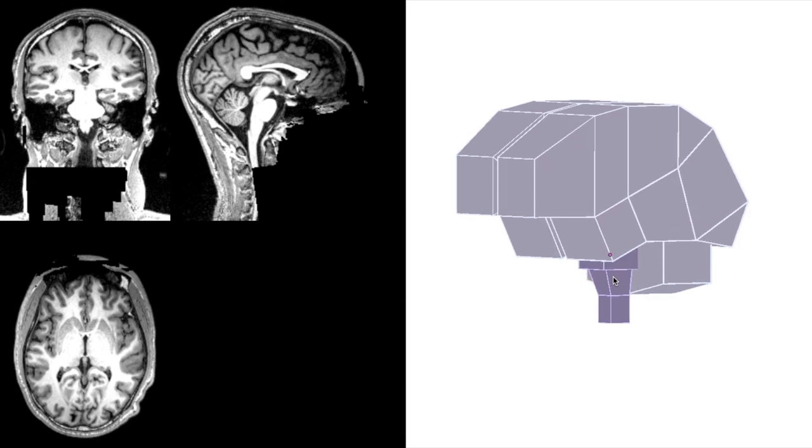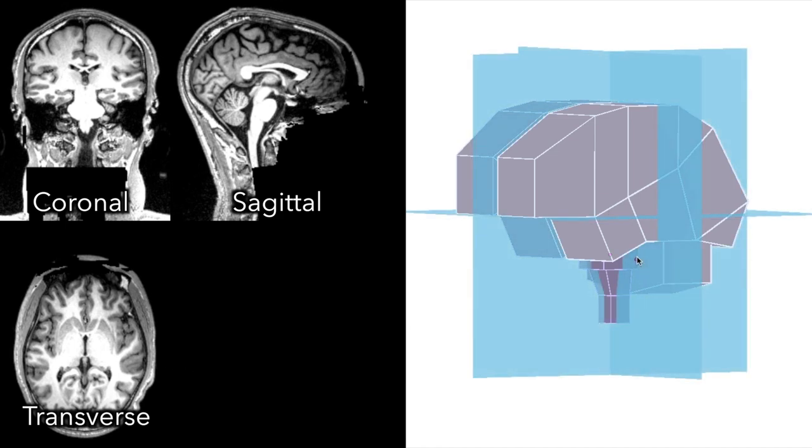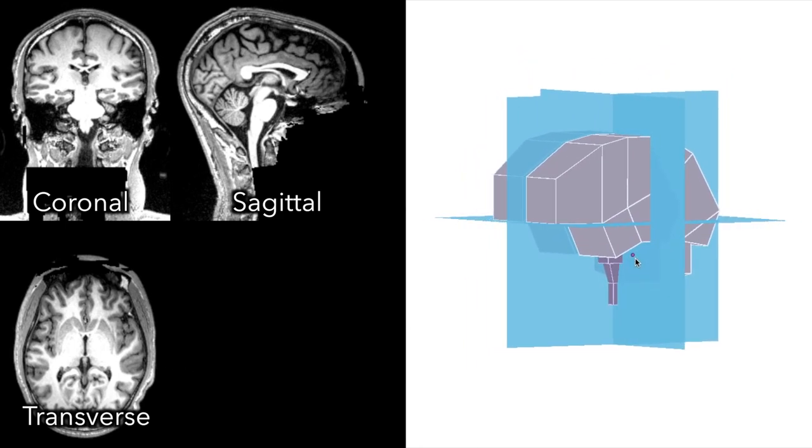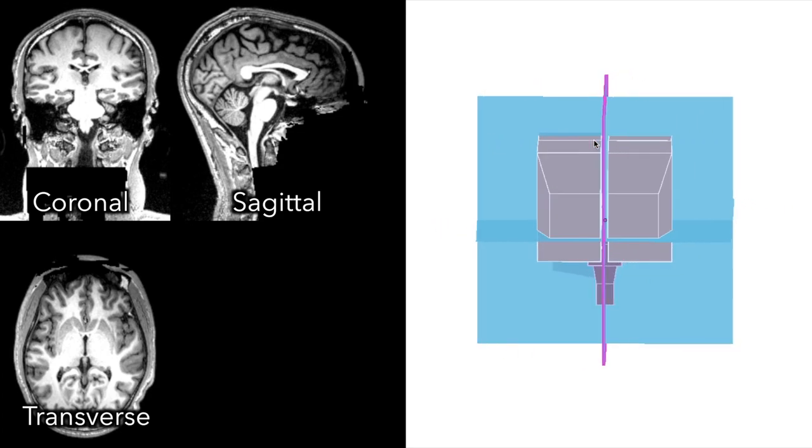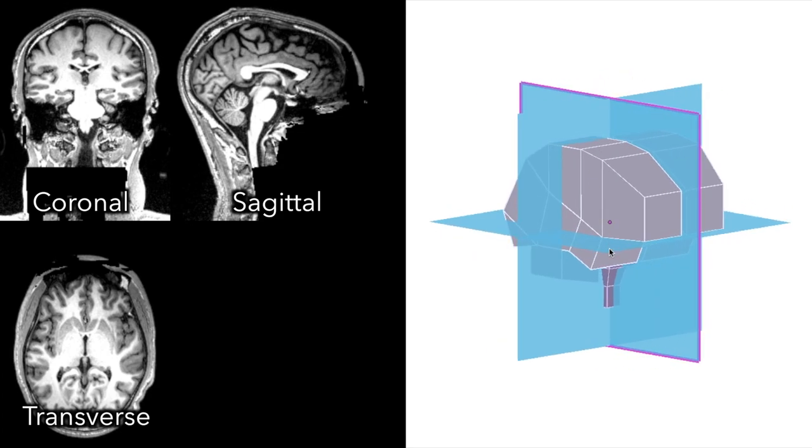The three sets of images you see here are taken in three different planes: the coronal, sagittal, and transverse planes. And this corresponds to these planes on our 3D model - coronal, sagittal, and transverse.